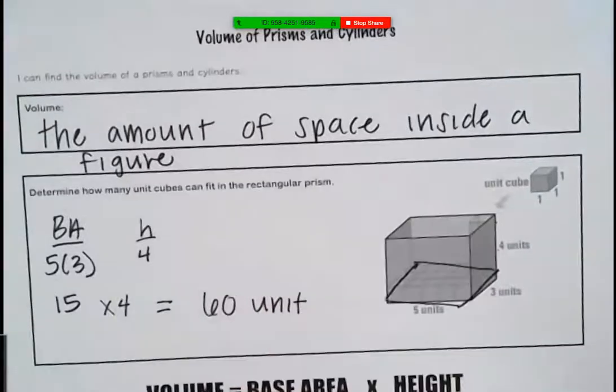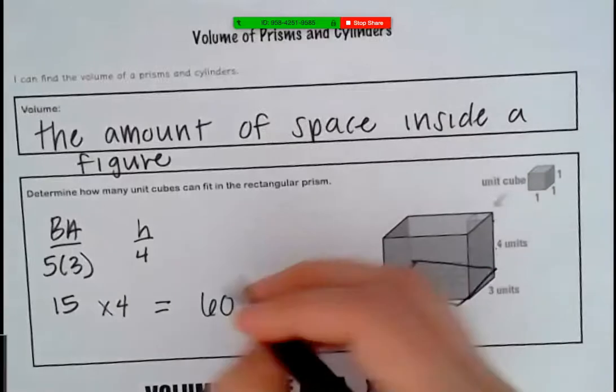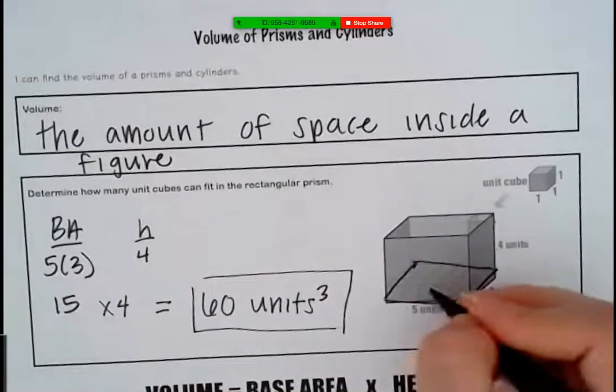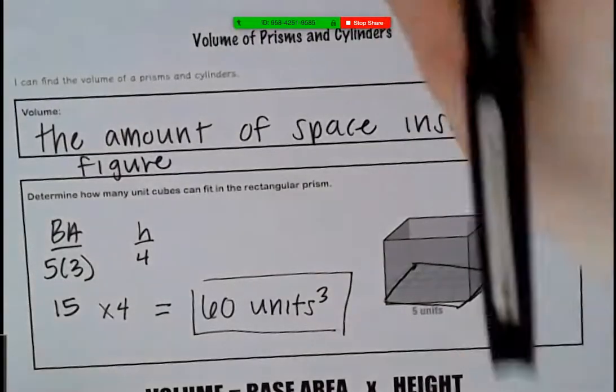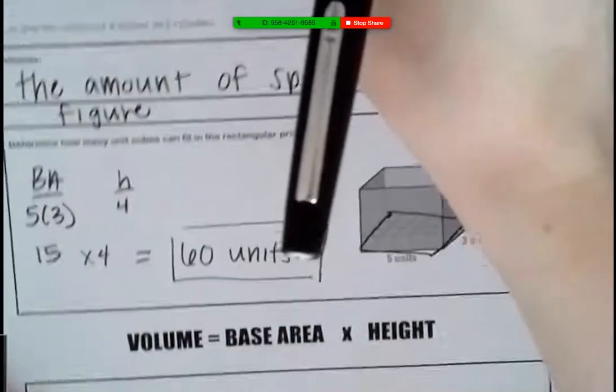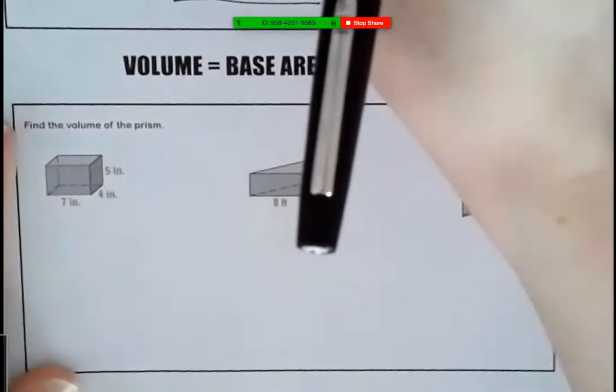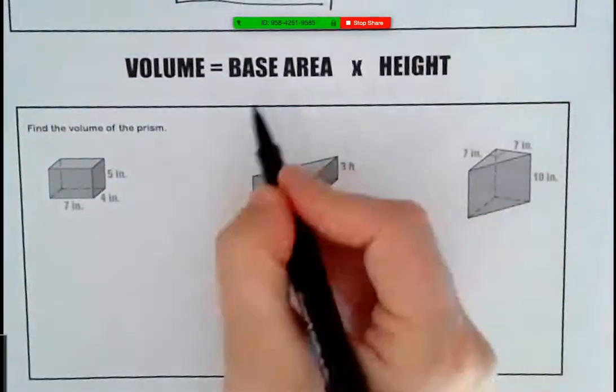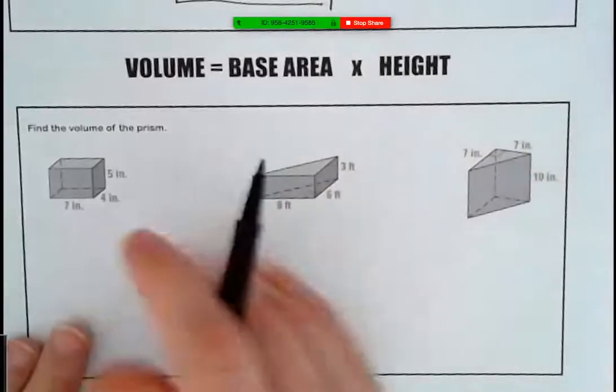But now when we label for volume, what do you think it is? Is it units, units squared, or units cubed? Units cubed, yes, because it's cubic units. So the big idea today is volume equals base area times height. We have to figure out whatever our base shape is, find the area of it, and then multiply by how tall our object is.